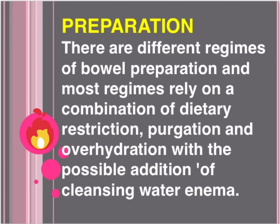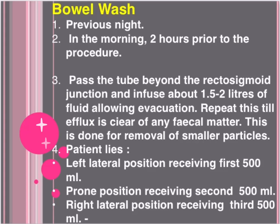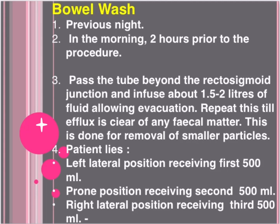Preparation involves different regimes of bowel preparation. Most regimes use a combination of dietary restriction, purgation, and over-hydration, with the possible addition of cleansing water enema bowel washout. The tube is passed beyond the recto-sigmoid junction and about 1.5 liters of fluid are infused, allowing evacuation. This is repeated until the reflux is clear of any fecal matter. The patient lies in left lateral position receiving first 500 mL, prone position receiving second 500 mL, and right lateral position receiving third 500 mL.